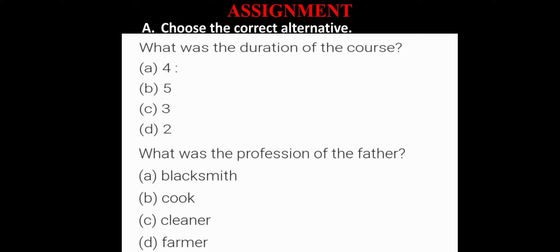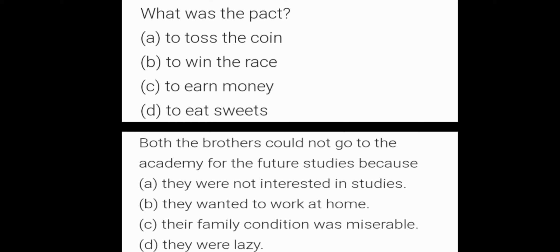Assignment, question 1: Choose the correct alternative. Now children, here 4 questions are there with 4 options. You can read that and as per your understanding of the text, of the chapter or the animation which you have seen, choose the correct alternative.